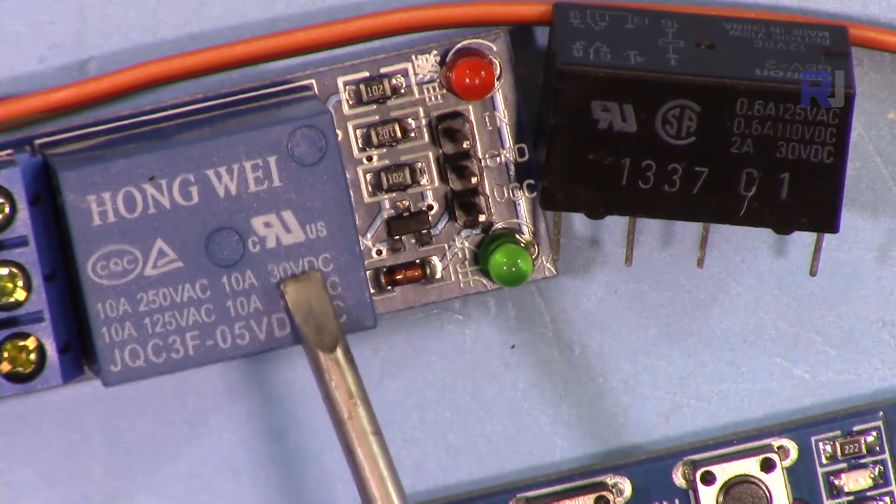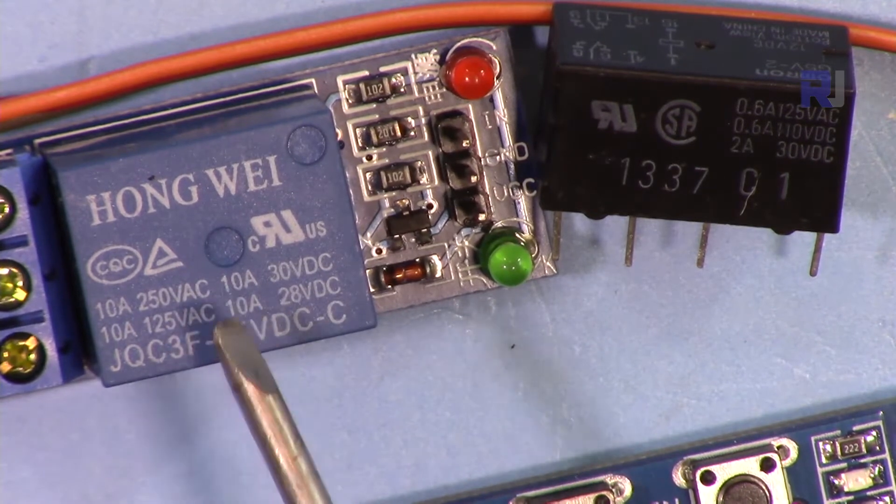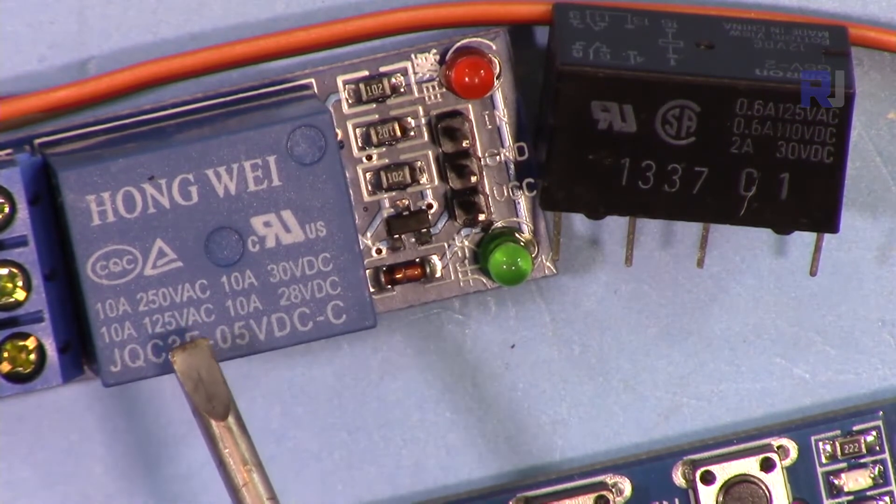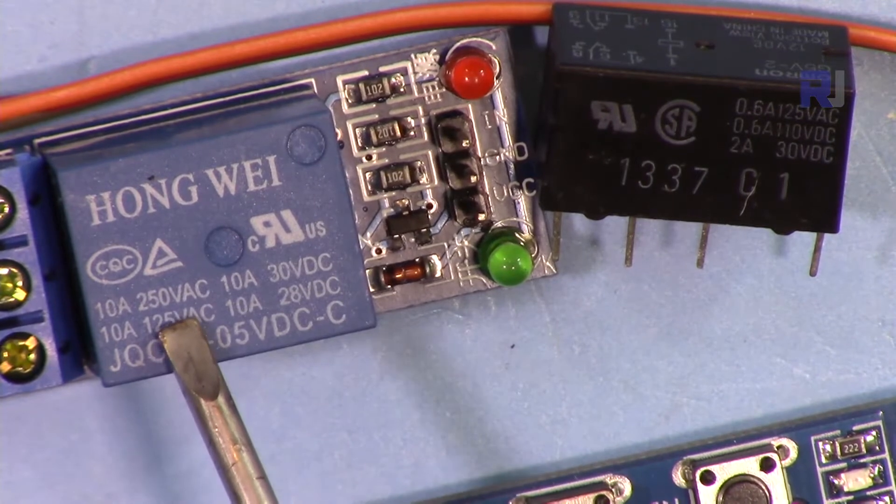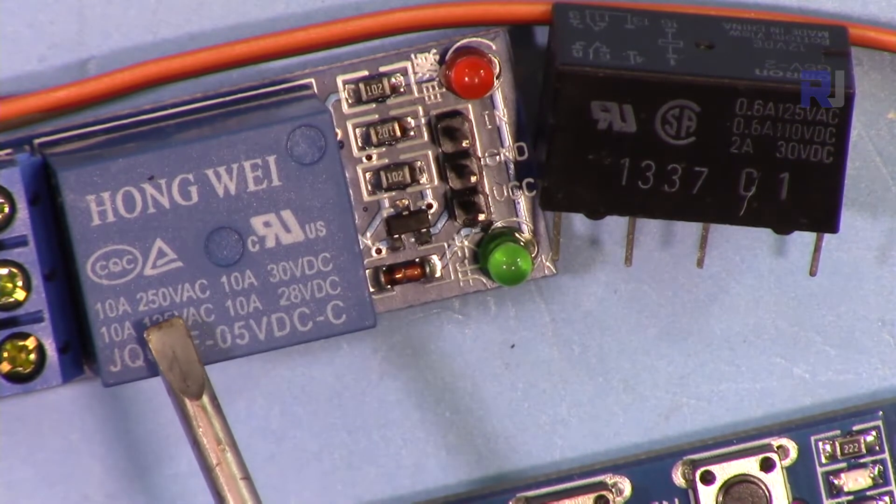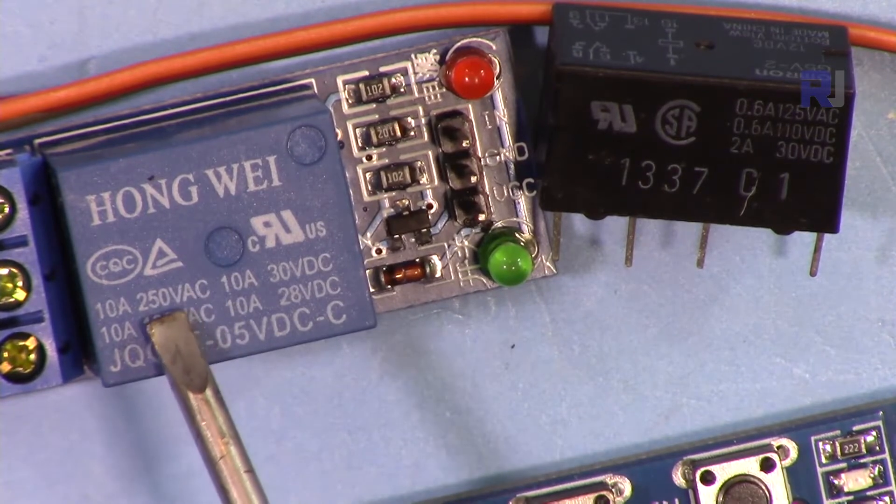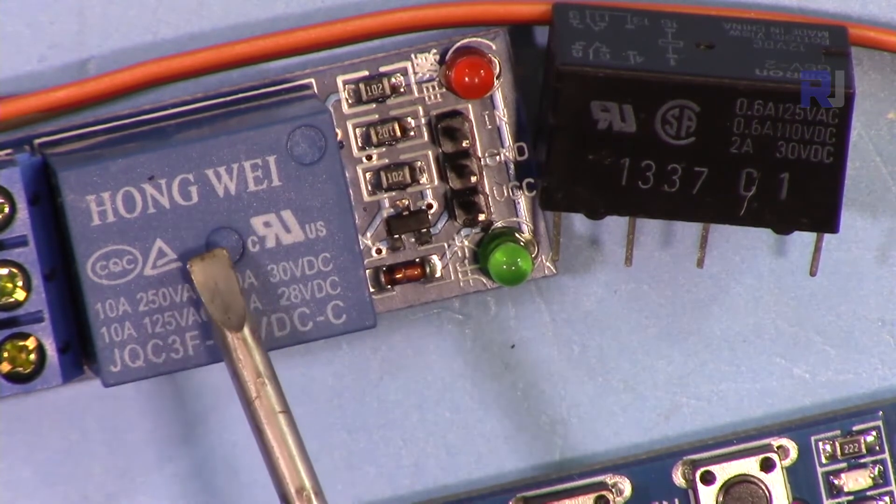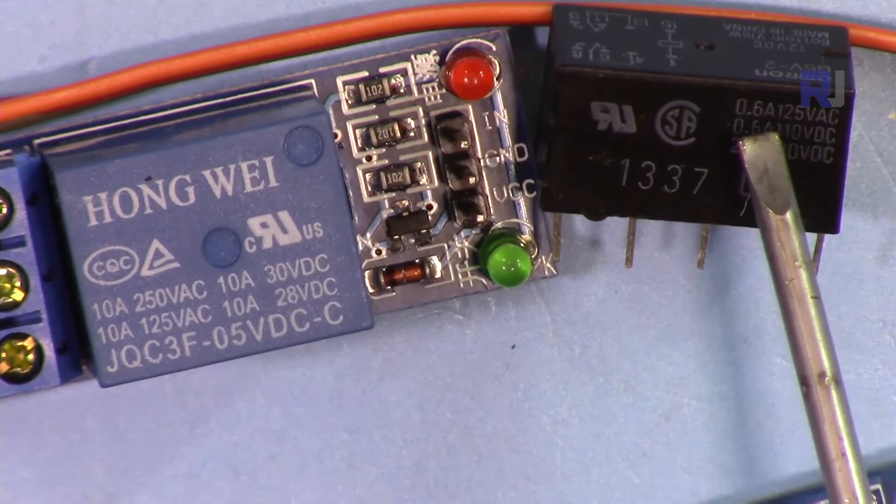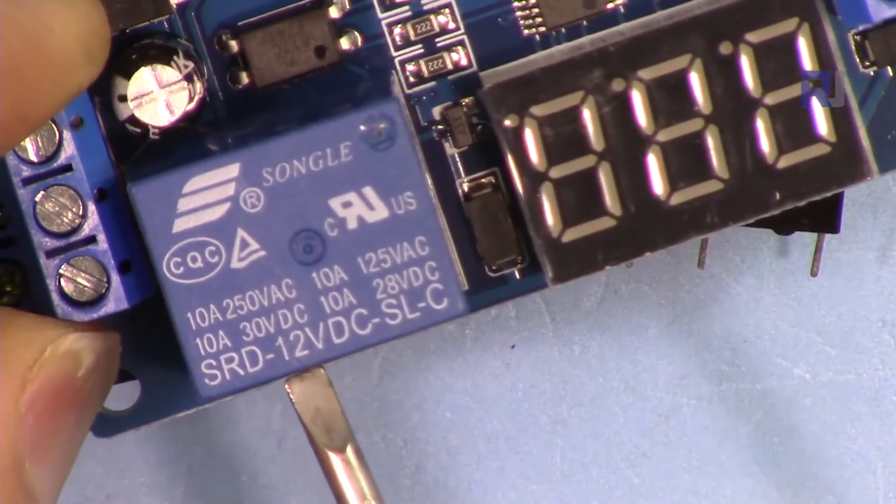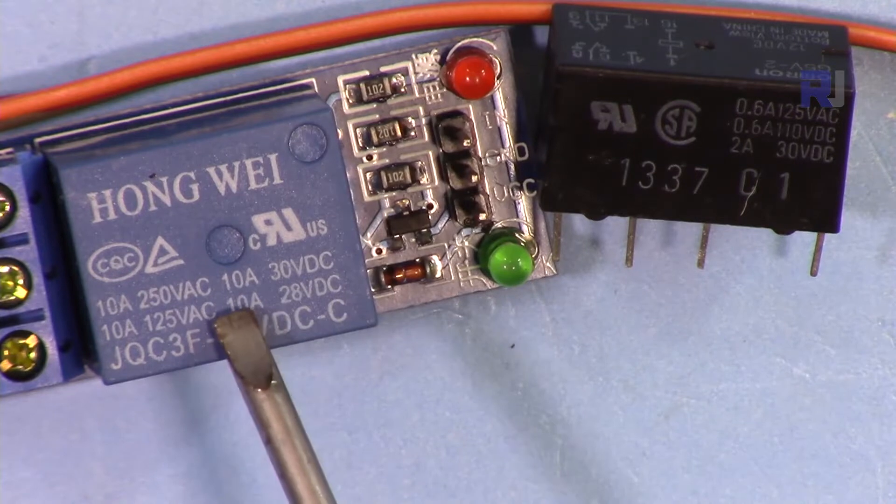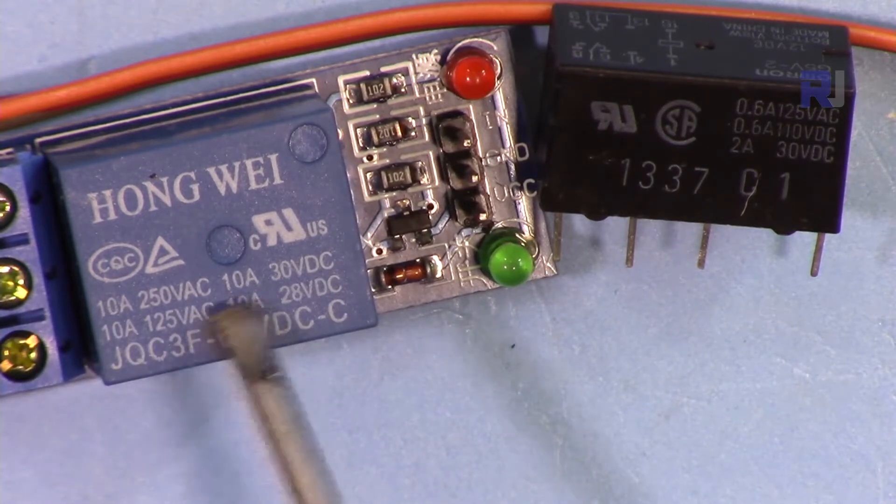This relay can handle 10 amperes at 28 volts and 10 amperes at all voltages - 120, 250, and 30 volts. To understand how much this can handle, in North America the voltage is 120 volts times 10 amperes, which is 1200 watts or 1.2 kilowatts. If you are in Asia and Europe with 220 or 240 volts, for 220 times 10 that's 2200 watts or 2.2 kilowatts. To avoid fire and overheating, do not allow current above the rated current to pass through this relay.